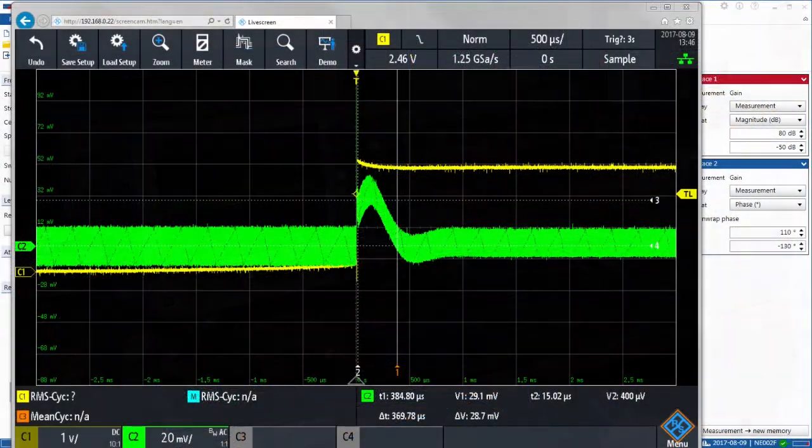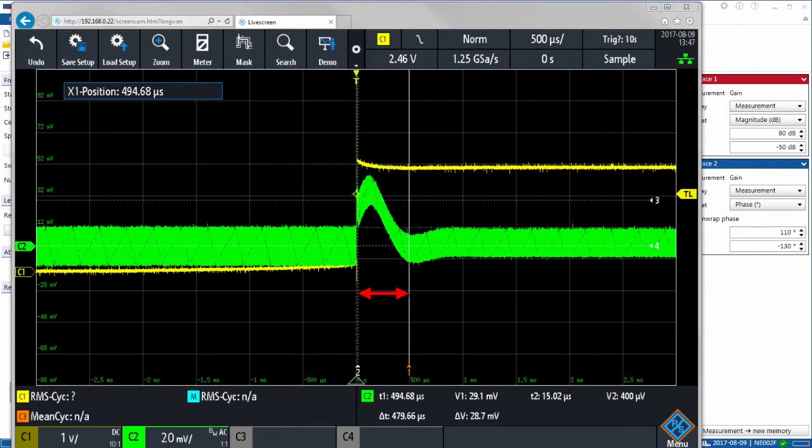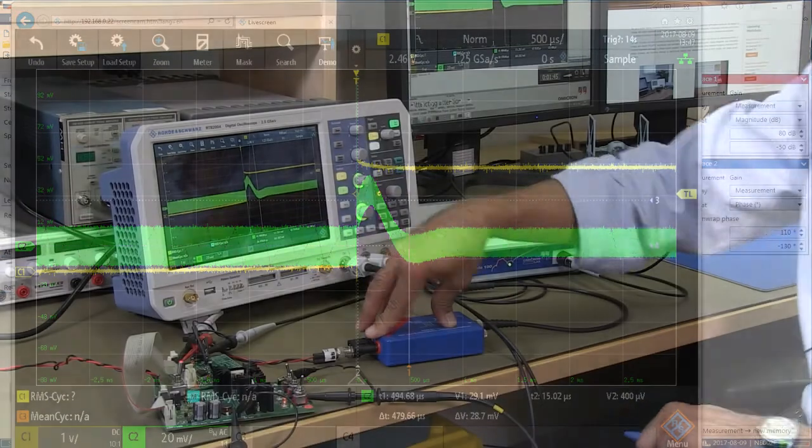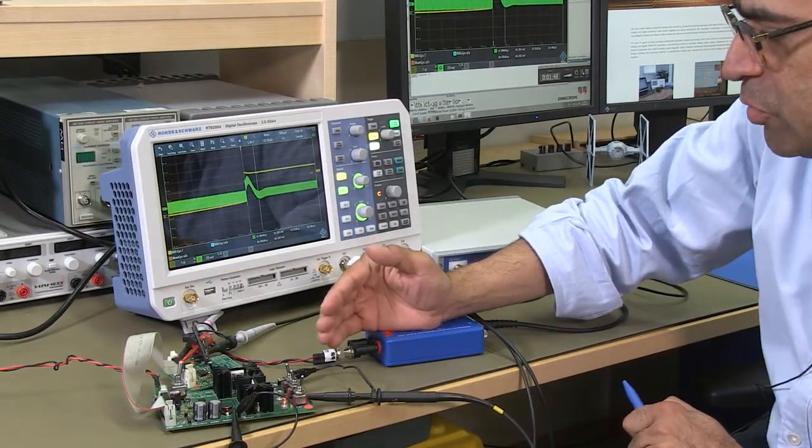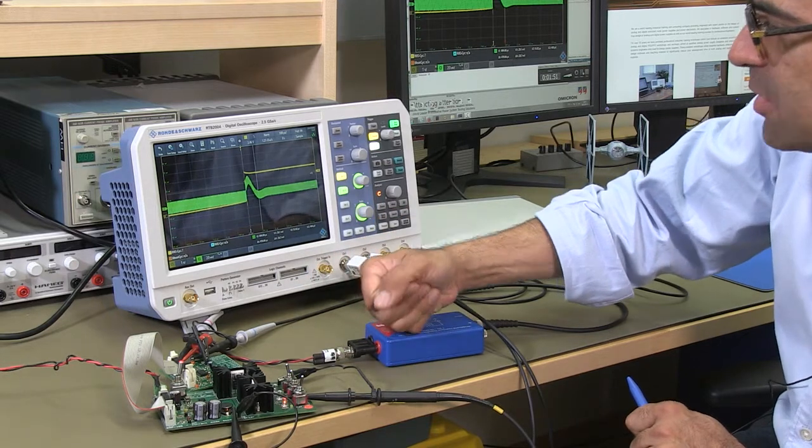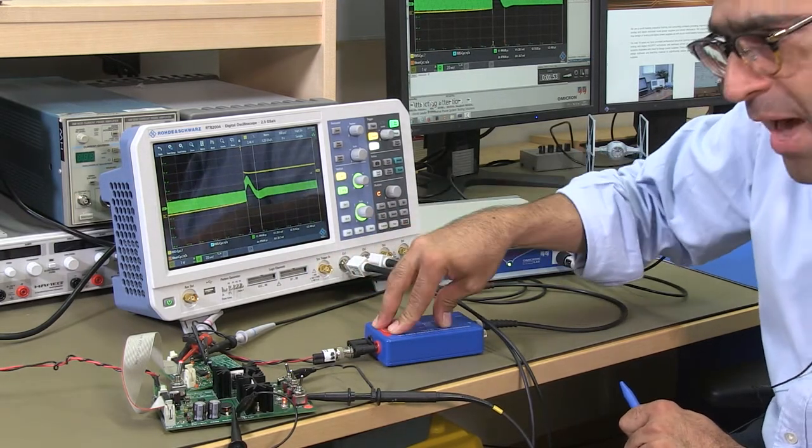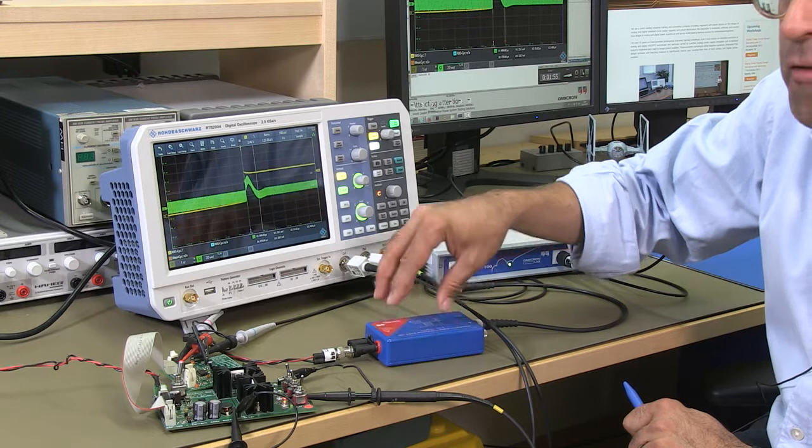So you can see now if I use the cursors that in fact the recovery time has gone to about 500 microseconds. This is because the inductor current has gone into discontinuous conduction mode in this voltage mode buck converter and it will be interesting to know what is the impact of this in frequency domain.